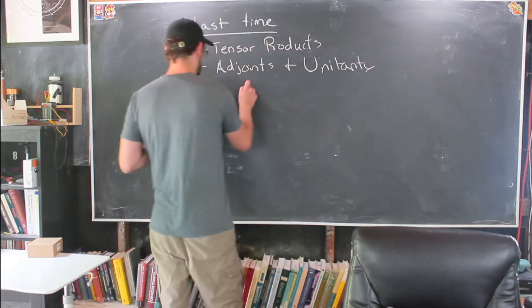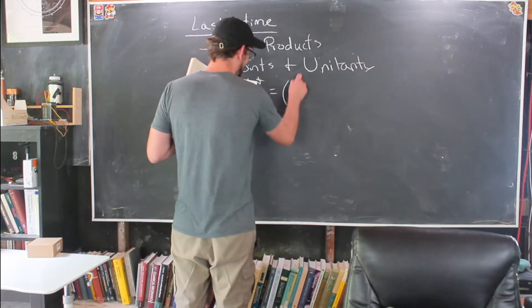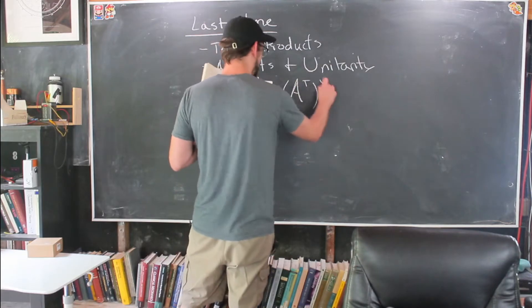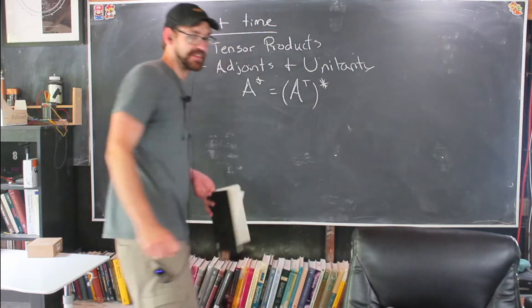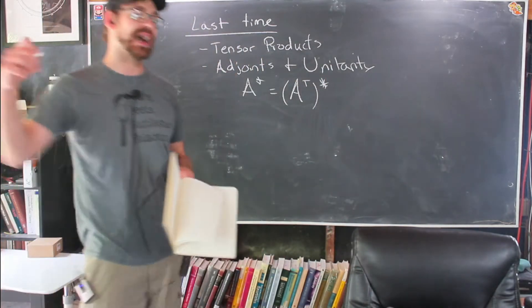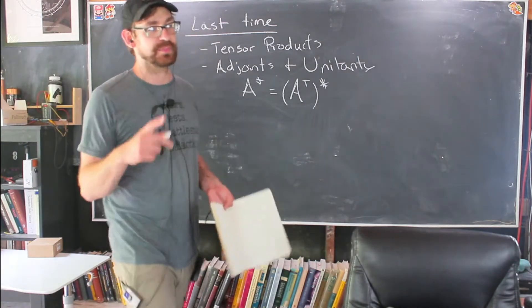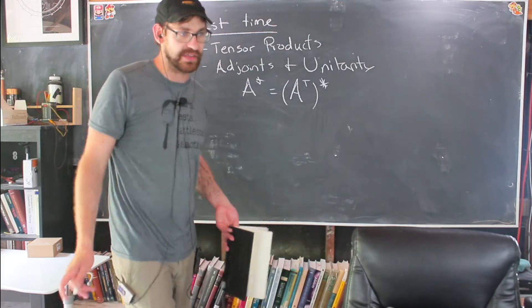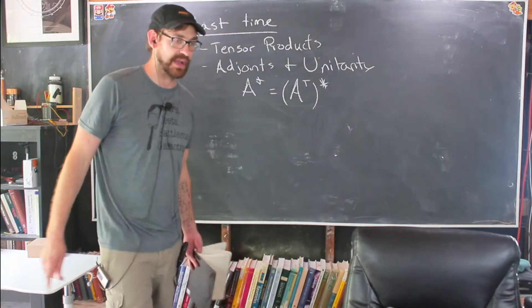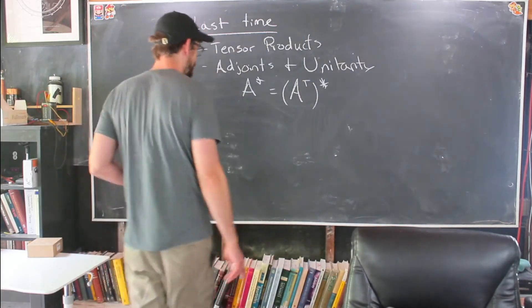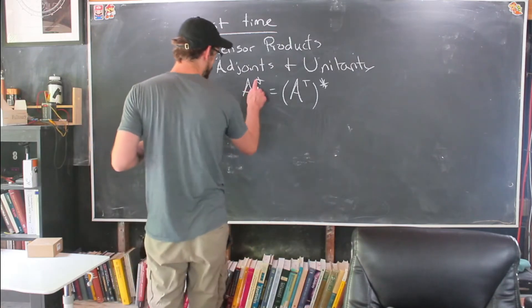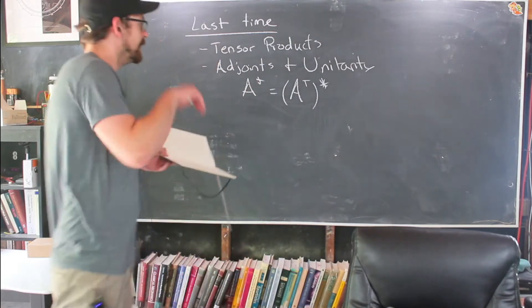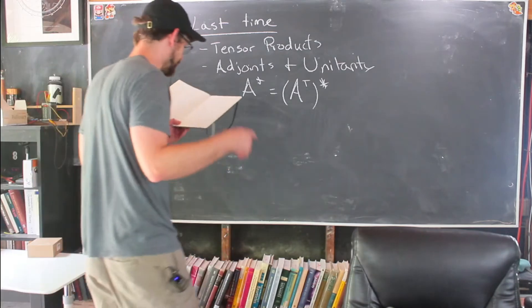We also talked about adjoints and unitarity. If we have an adjoint of a matrix A, the adjoint is just the transpose and the complex conjugate. It means you take every single element in the matrix A, you complex conjugate it. The transpose is basically taking the indices and flipping them, drawing a line down the diagonal and flipping the pieces around. That's if you're unfamiliar with what I meant by switching the indices, the ordering of the indices.